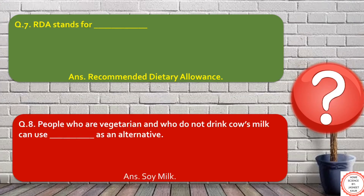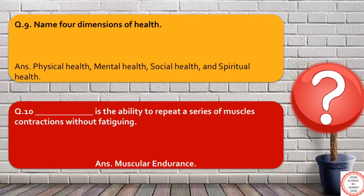Question number eight: people who are vegetarian and who do not drink cow's milk can use soy milk as an alternative to animal milk. Almond milk can also be included in this.